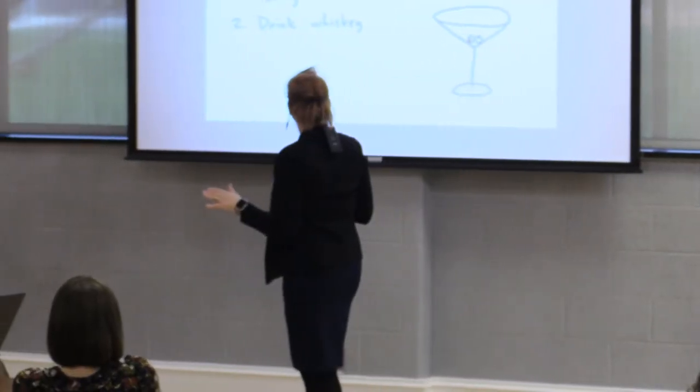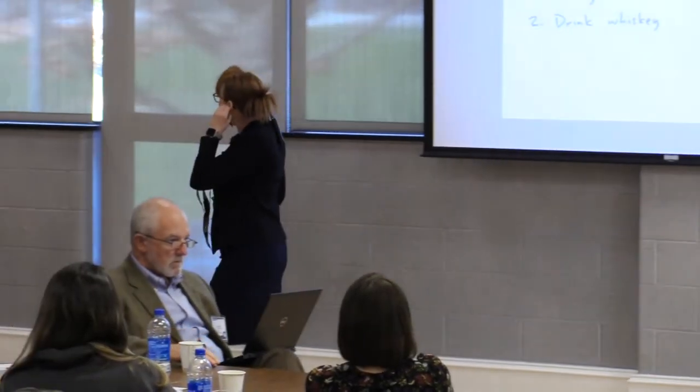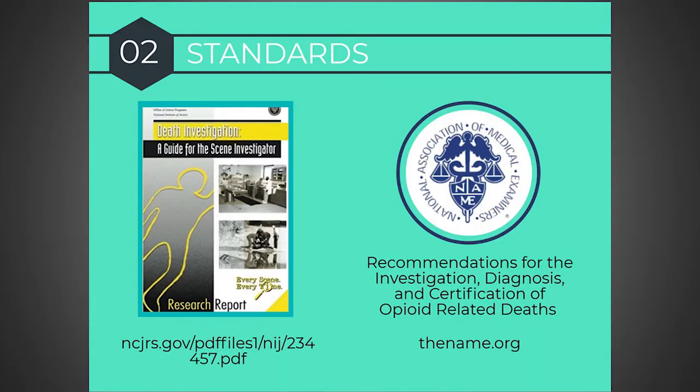The two standards I'm talking about: first, the NIJ standards for scene investigation — how medical death investigators are supposed to investigate the scene. Second, the NAME recommendations for the investigation, diagnosis, and certification of opioid-related deaths at thename.org. The scene standards — we call it every scene, every time. Those are the standards that should be used in the medical examiner or coroner's office.